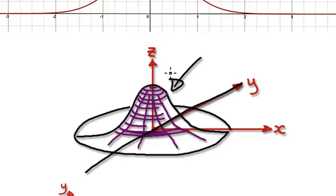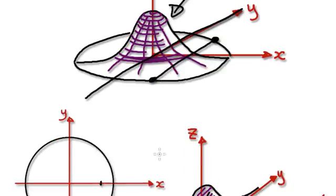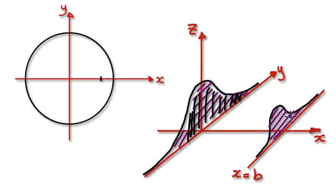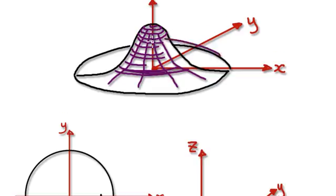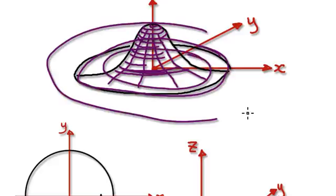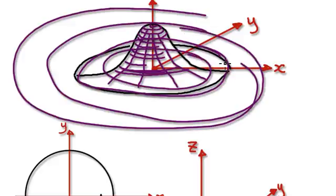If you imagine having a 3D solid here like this, and then get a knife and cut it along here, you would get a cross-sectional area of something looking like this. So you can imagine this circle here, and then you've got circles here, and then the circles go all the way to infinity.